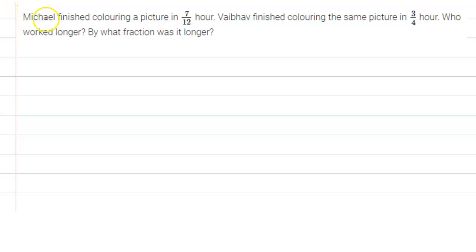Hello everyone, the given question is: Michael finished coloring a picture in 7/12 hour. Vaibhav finished coloring the same picture in 3/4 hour. Who worked longer? By what fraction was it longer?